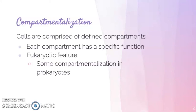Overall, cells are comprised of different defined compartments. In eukaryotic cells we know these as organelles. Each compartment has a specific function, and generally compartmentalization is a eukaryotic feature, but there is some compartmentalization in prokaryotic cells as well — scientists have found these in protein-bounded areas and lipid-bounded areas within prokaryotic organisms.